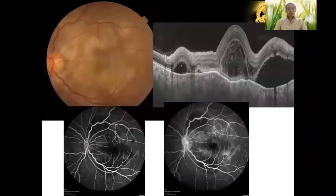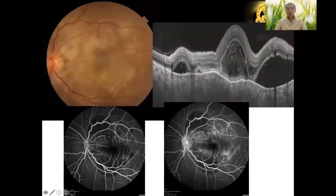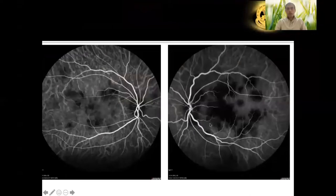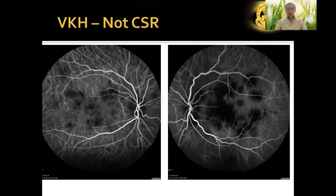Multiple pockets of fluid with yellowish deposition at the choroidal level in a patient with a hyperemic disc, dots on OCT with unclear fluid, and leakage on fluorescein angiography — on ICG, active choroiditis patches become hypofluorescent where lymphocytes have infiltrated. This is active VKH, not CSR. Pockets of fluid can occur in both CSR and VKH; the presence of disc inflammation, other signs of inflammation, and angiographic features help distinguish between the two.